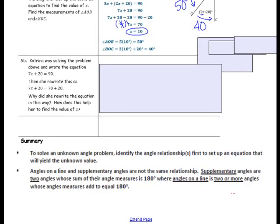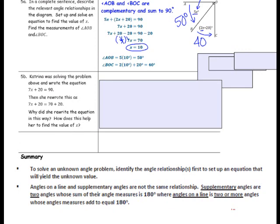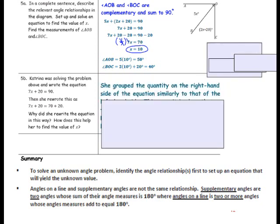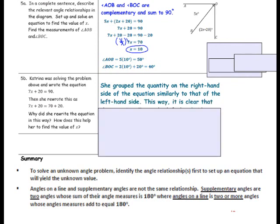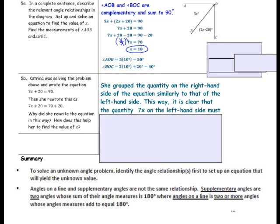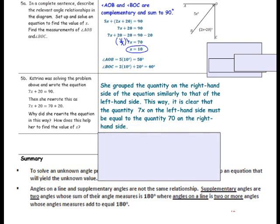Exercise 5b: Katrina was solving the problem and wrote the equation 7X plus 20 equals 90, then rewrote it as 7X plus 20 equals 70 plus 20. She grouped the right-hand side similarly to the left-hand side, making it clear that the quantity 7X on the left must equal the quantity 70 on the right-hand side.